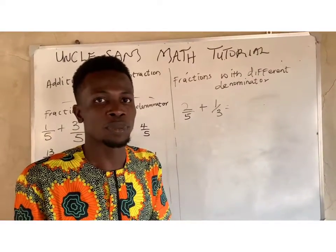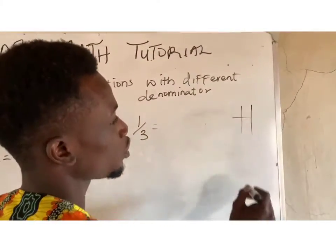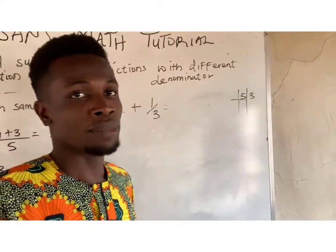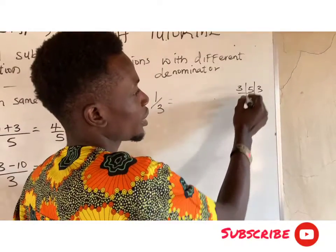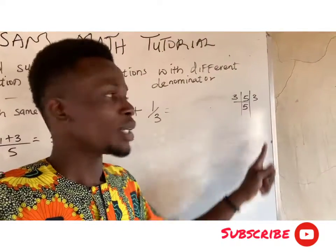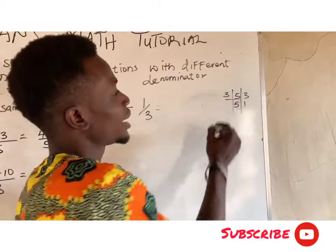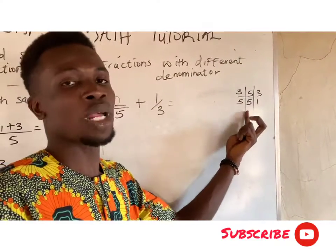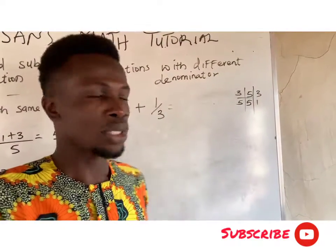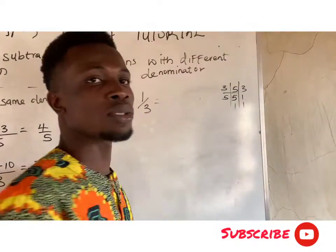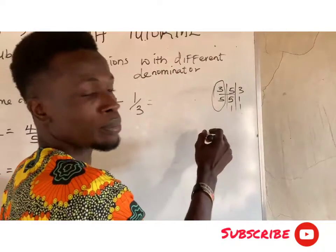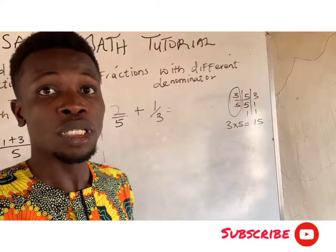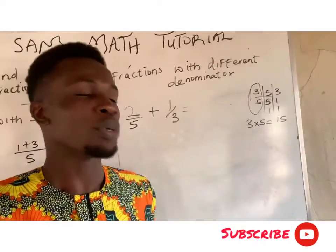A simple way to find the lowest common multiple is to draw a table and put the denominators in it. What number can divide any one of them? We try 3: 3 cannot divide 5, so bring down 5, but 3 can divide 3, giving 1. Then we try 5: 5 divided by 5 is 1, and bring down the 1. Once we get to 1, 1 after dividing, we are done. So the LCM is 3 times 5, which gives us 15.